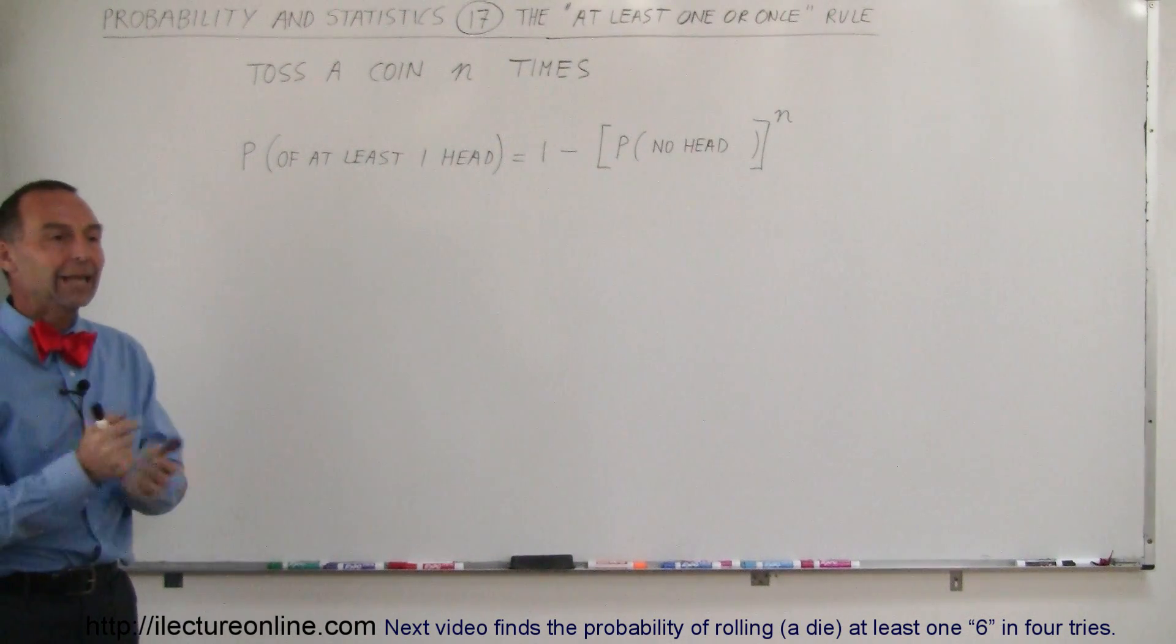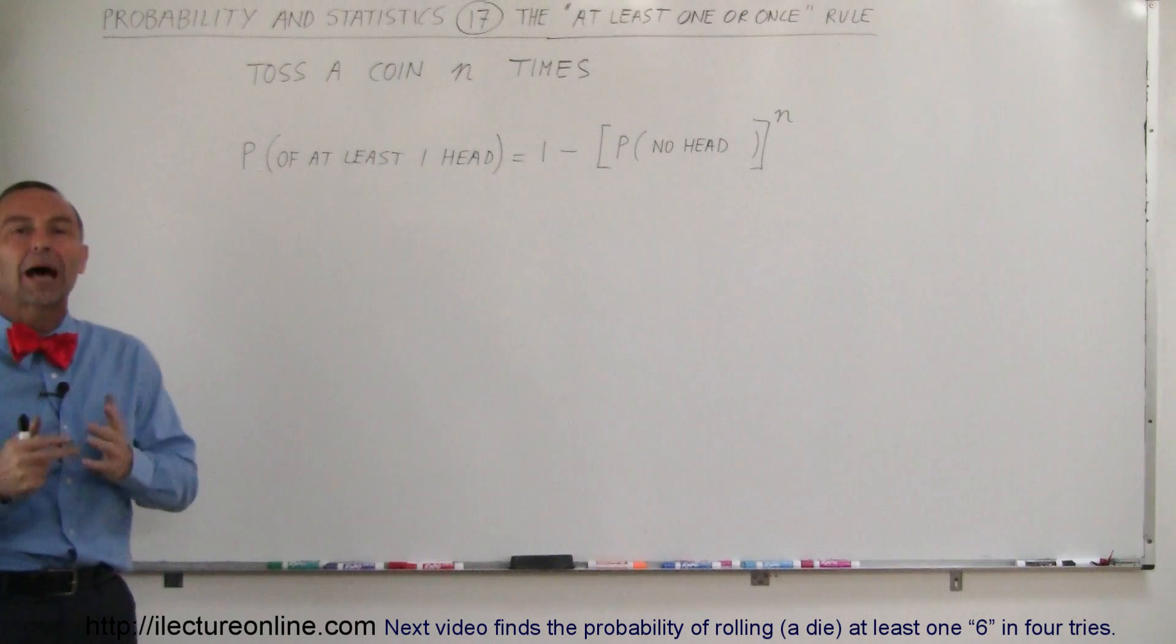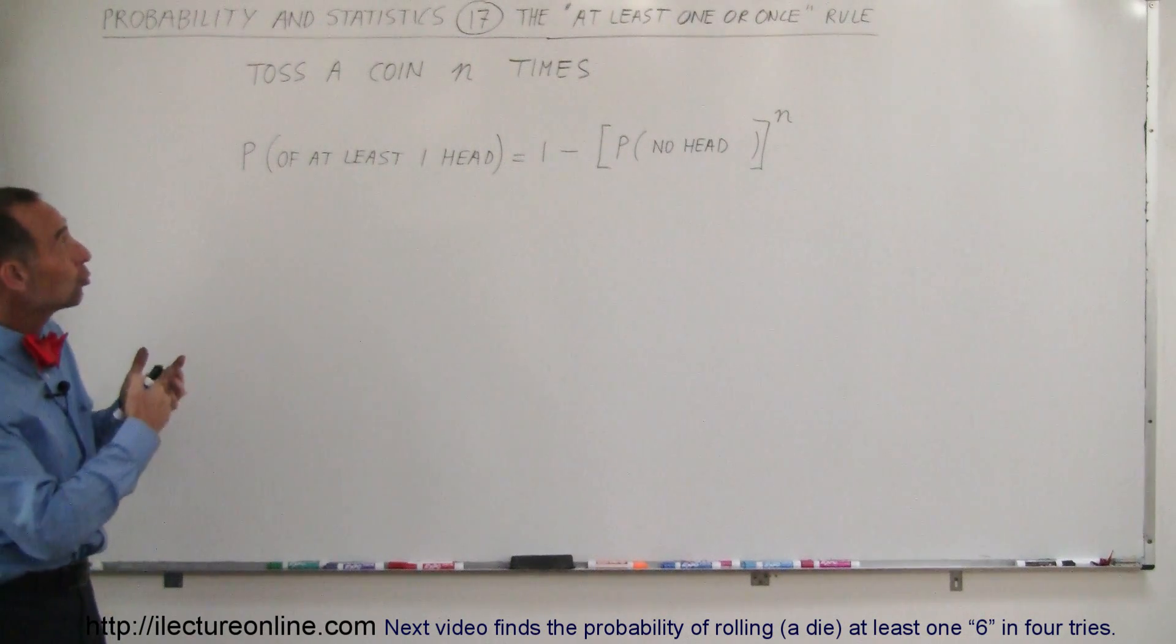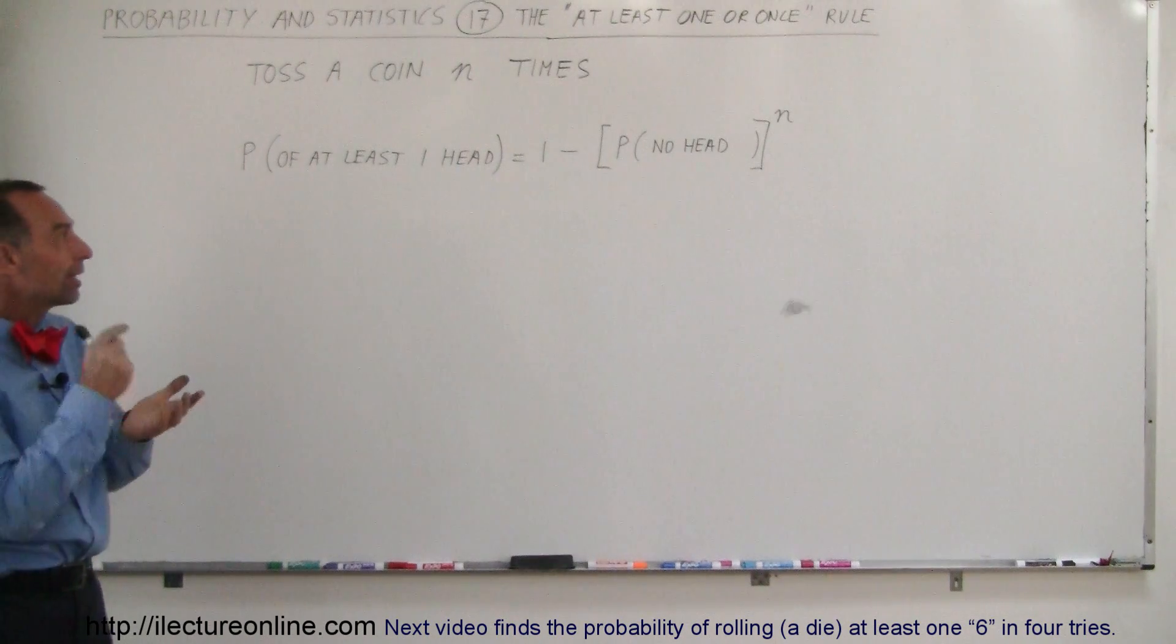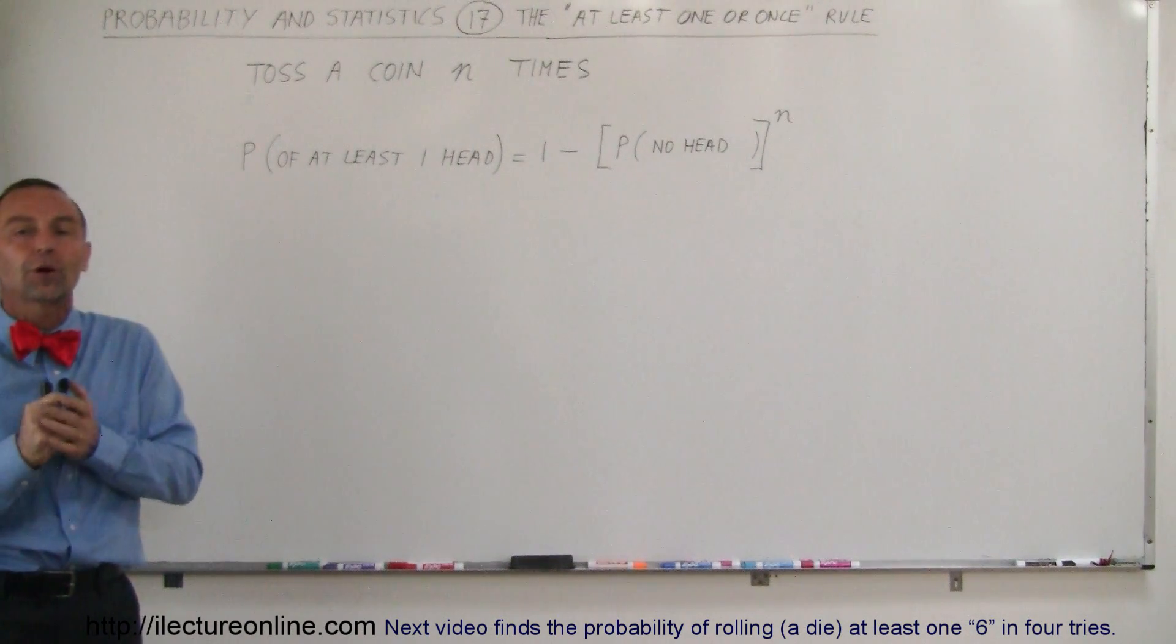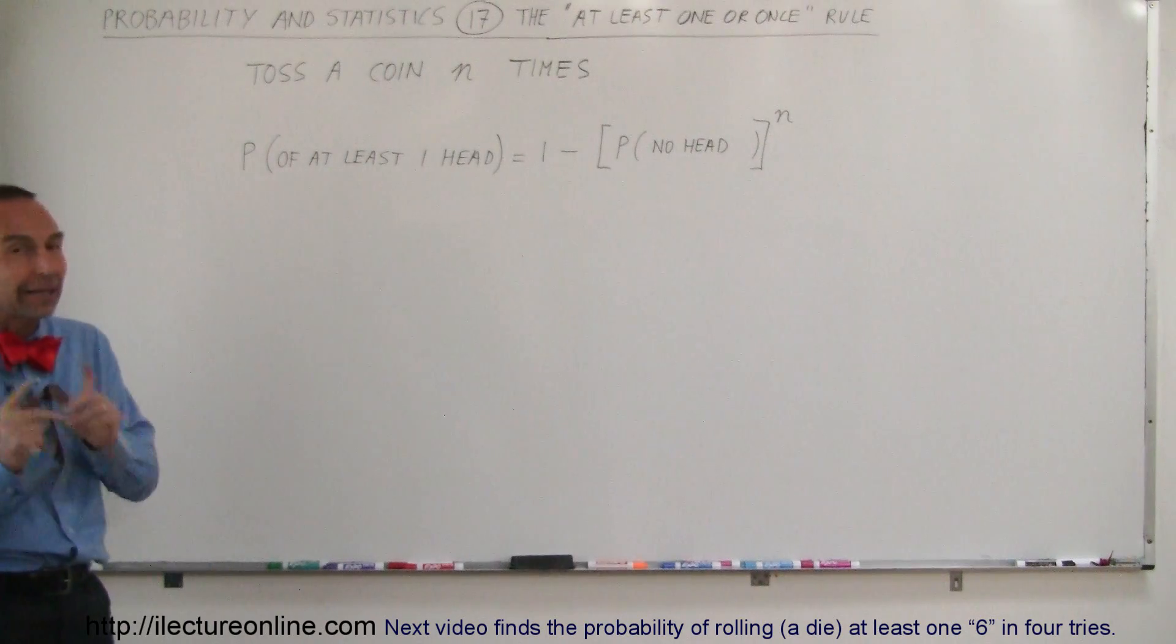You do a bunch of things and you want at least one outcome. For example, you toss a coin a certain number of times, let's call it n times, and you want at least one head to occur on all those tosses. How do you figure that out?